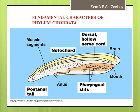The second fundamental character is the dorsal hollow tubular nerve cord, which extends from the anterior tip to the posterior tip, dorsally above the notochord. The third is paired pharyngeal gill slits — openings present on the pharyngeal wall that communicate the interior of the pharynx with the external environment. The fourth is the presence of a post-anal tail, posterior to the anus.